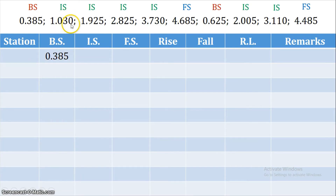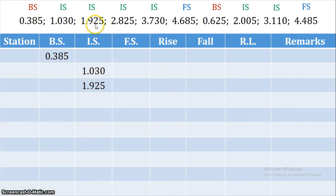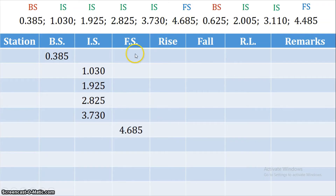The first row has the back-site value 1.013. The next rows have intermediate-site values: 1.925, 2.825, 3.730, and the fore-site value 4.685. Each station is in a different row. The fore-site and the next back-site on the same row indicate the change point — that is, the turning point showing the instrument is being shifted.